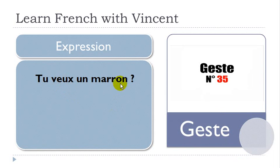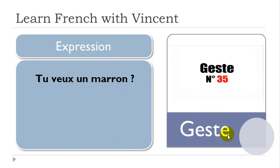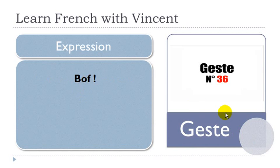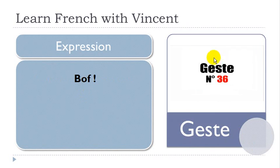Tu veux un marron? If you want to threaten someone and tell them that you could hit them — that's the expression. Tu veux un marron — you want me to hit you? Then there is also the 'bof' face expression — it's not a gesture but a facial expression. Someone proposes an activity and you're not really interested, so you say 'bof' — and that's it.